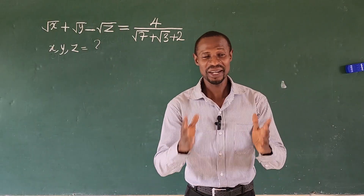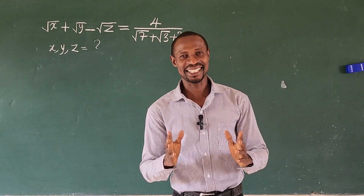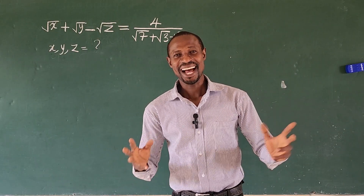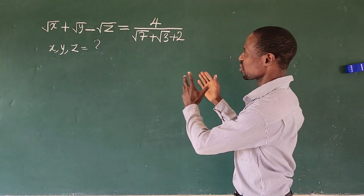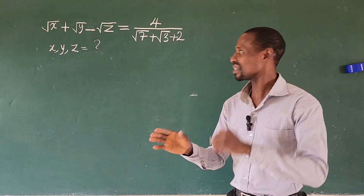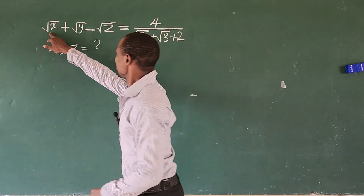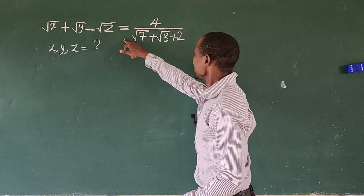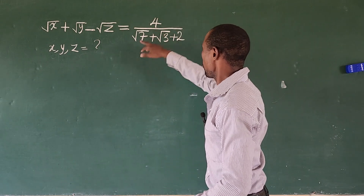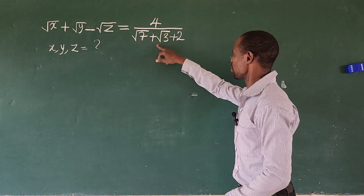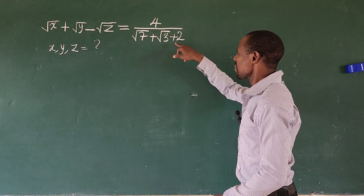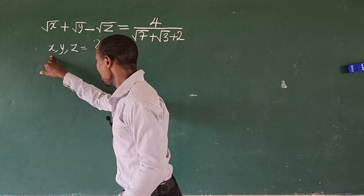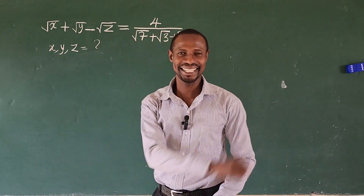Hello everyone, welcome to today's class. Today we have a very nice mathematical challenge. How do we solve this question on the board? The question reads: root x plus root y minus root z equals 4 all over root 7 plus root 3 plus 2. What would be the values of x, y, and z?